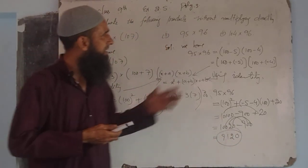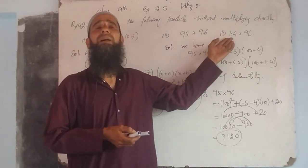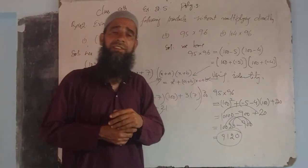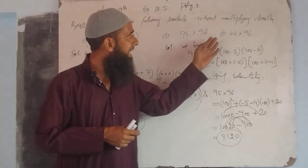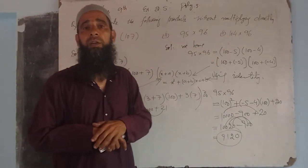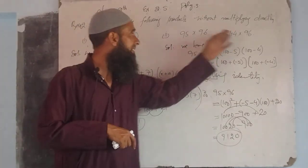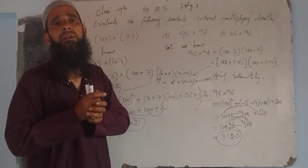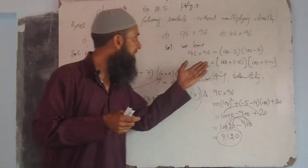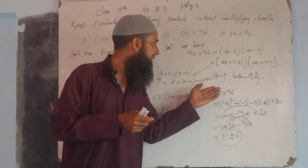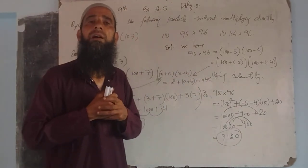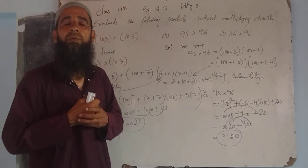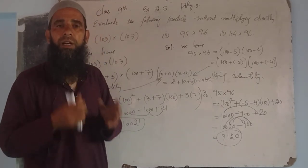Dear student, third part jo hai — it is 104 into 96. 104 can be written as (100 + 4) and 96 can be written as (100 − 4). Wo bhi isi identity form mein hoga, and you will try this part at your home. Thank you, have a nice day.